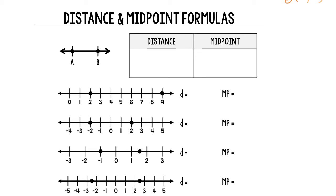Now we're going to do distance on a number line — it's just a little bit different. The distance equals the absolute value of A minus B, or the absolute value of B minus A, because distance does not have a negative value. If you go five miles to school, you don't go negative five miles home — you just go five miles in another direction. The midpoint on a number line equals A plus B over 2, looking in only one dimension.